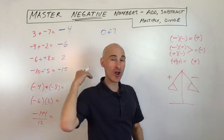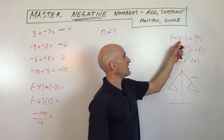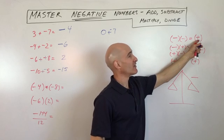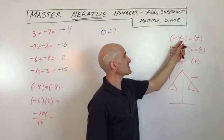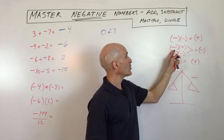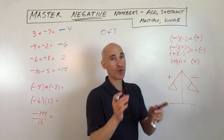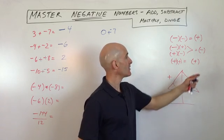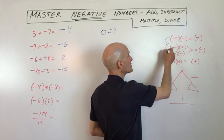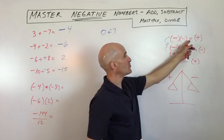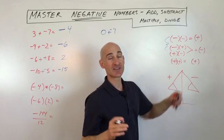Let's do another example: negative ten minus five. From now on we're not going to think about subtraction — we're just going to think about addition, because they're really very similar operations. Subtraction is like adding the opposite. So negative ten minus five becomes negative ten plus negative five. Now we're back to familiar territory: we've got a negative and a negative, we're adding them together. It's like walking backwards ten steps and another five steps backwards. How far back are you? Negative fifteen.